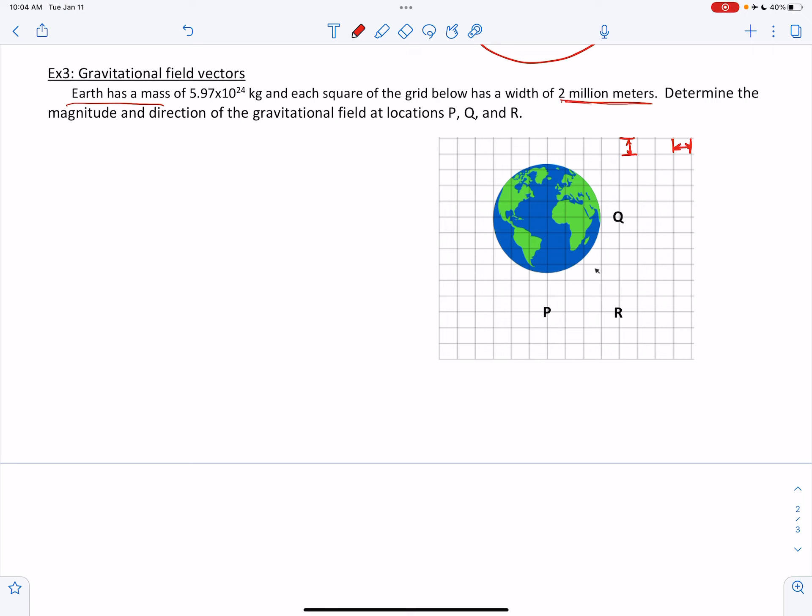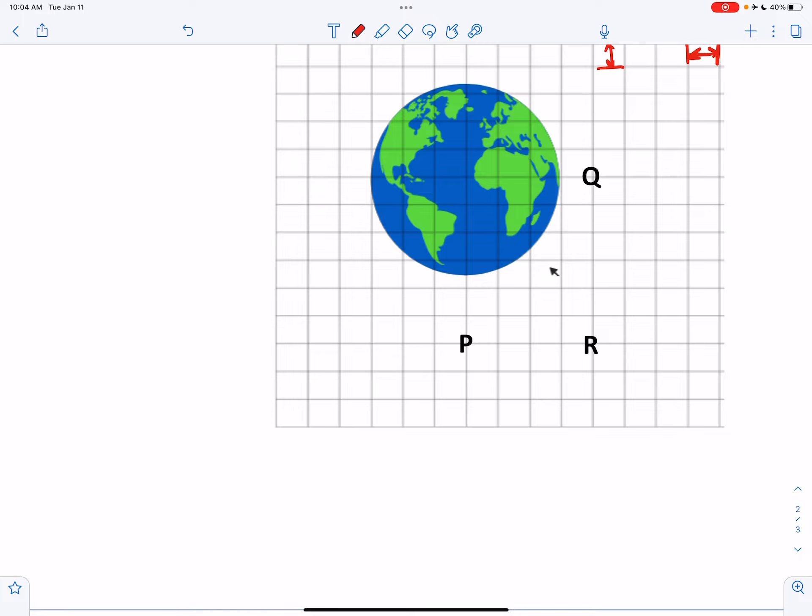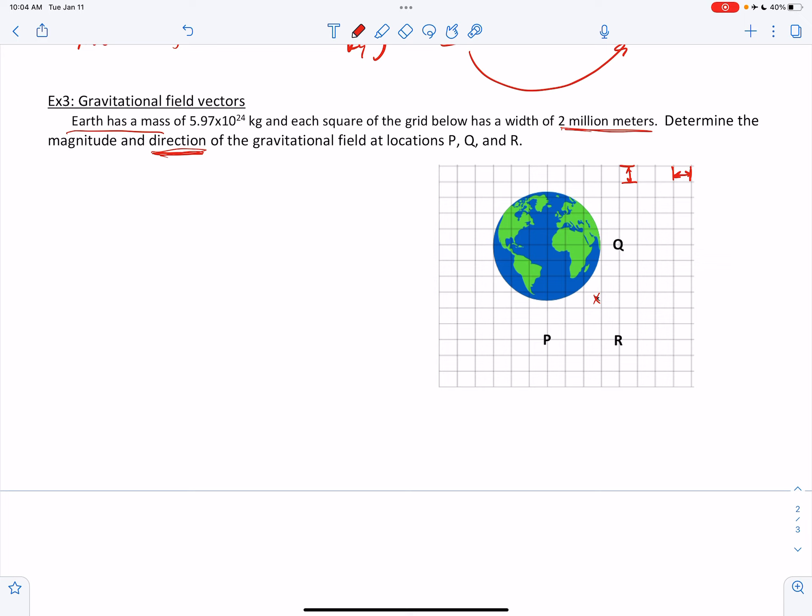So first of all, let's deal with this word, the direction, the direction of the gravitational field at each of the locations. And by the way, there is a tiny arrow right here which should have been excluded, so you can ignore that.